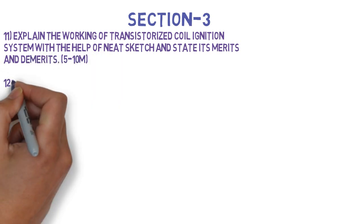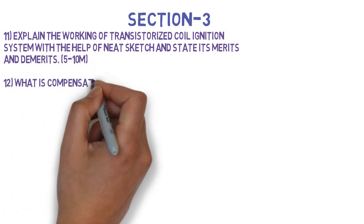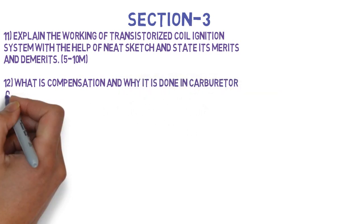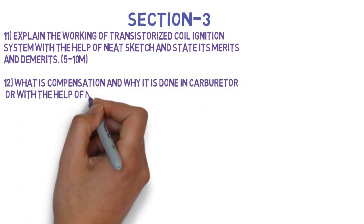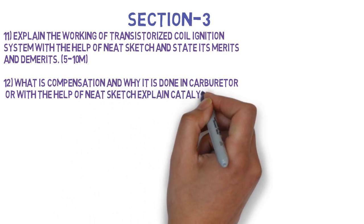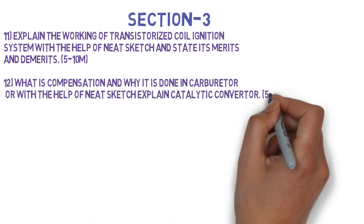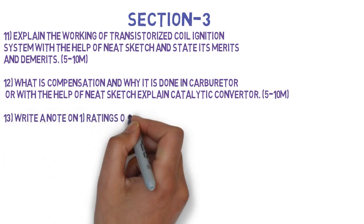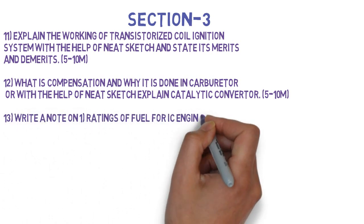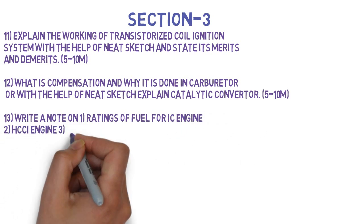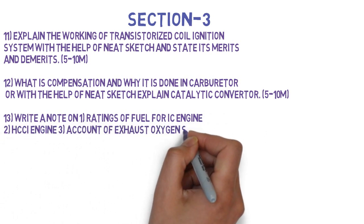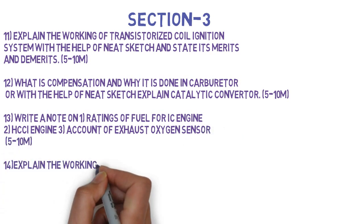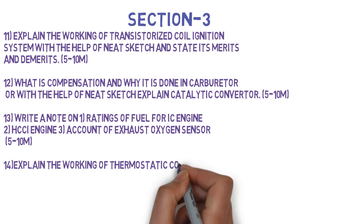Next is: What is compensation and why it is done in carburetors, or with the help of a neat sketch explain catalytic converter. This can come for 5-10 marks. Next question is: Write a note on — first, rating of fuel for IC engine; second, HCCI engine; third, account of exhaust oxygen sensor. This can come for 5 marks per question, or 10 marks if all three are asked together.